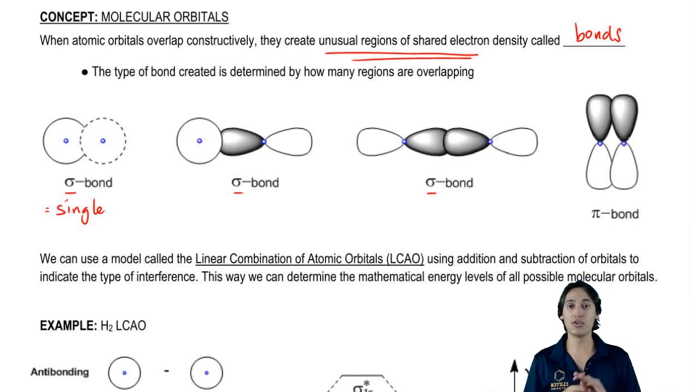What that means is that a sigma bond is one region of overlap. There's only one place where these orbitals are coming together to make that bond happen. It turns out there are several ways to make this region of overlap, several ways to make a sigma bond.